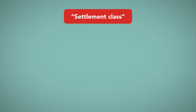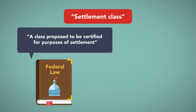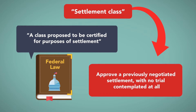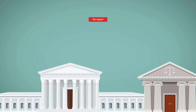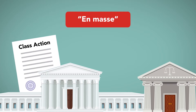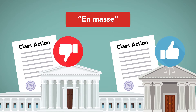One particular type of limited class, the settlement class, has been particularly important in mass tort litigation. The federal rule governing class actions explicitly refers to a class proposed to be certified for purposes of settlement. The settlement class is certified simply to approve a previously negotiated settlement, with no trial contemplated at all. This kind of limited class can only be brought to settle cases en masse. Courts using settlement classes have revived the use of class actions to handle mass torts, even when the Supreme Court's decisions in Amchem and Ortiz made it less likely that the underlying cases would have been approved for class action status.